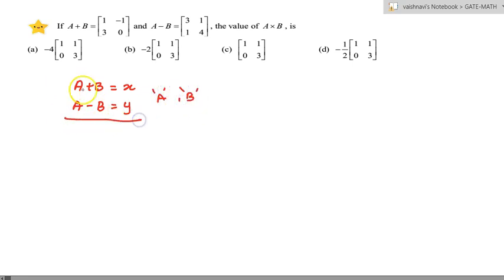What you will do, you will add both the matrices. 2A will be equal to X plus Y, and A is equal to X plus Y by 2. And to find B, you will subtract two matrices and we will find 2B is equal to X minus Y, B is equal to X minus Y divided by 2. So that you have found A matrix and B matrix. The same thing we are going to apply here.